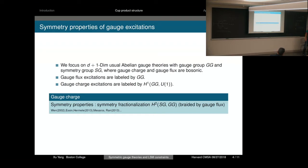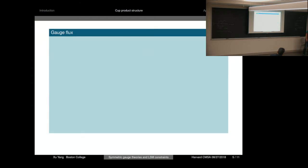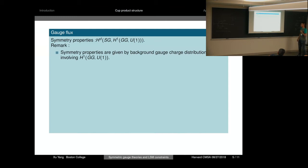The symmetry properties of the gauge flux is more involved. We claim that it's described by this H^d dimensional cohomology group of the symmetry group with coefficient in H^1(GG) with coefficient in U(1), which labels the gauge charge. To motivate this, we first see that symmetry properties of the gauge flux are given by background gauge field configurations. Therefore, we need this coefficient in H^1, which encodes the gauge charge. Let's see several examples to further justify this statement.